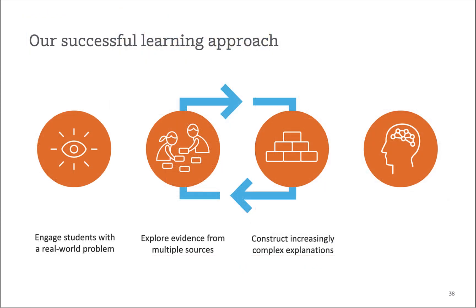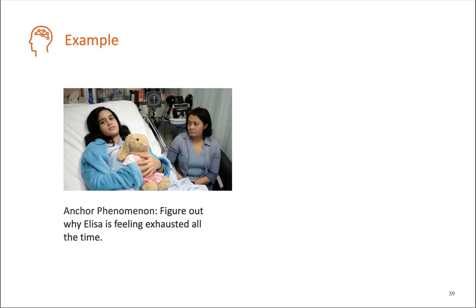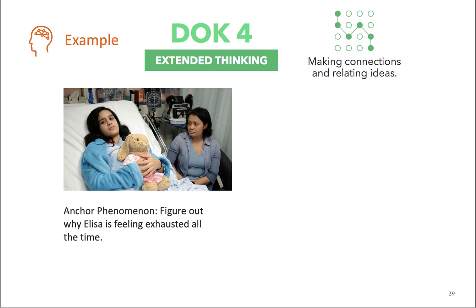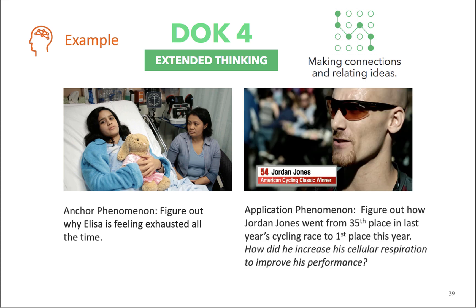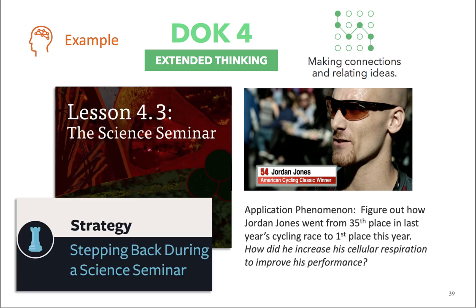Once students construct increasingly complex explanations, we challenge them to solve a different problem at the end of core units — called an application phenomenon. For instance, students diagnose our patient, figure out her medical condition, and learn how cells function and systems work together. Then we extend their thinking: in the last chapter, students meet an athlete who went from 35th place in cycling to first in a year. How did he increase his cellular respiration to make that performance jump? Students prepare for a science seminar, with teacher strategies to step back and let students explore more independently, researching his diet, high-altitude training, and preparing oral arguments. The seminar allows students to express their understanding through this performance task.